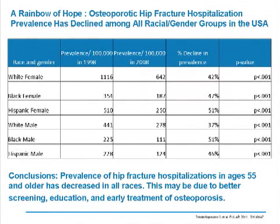Good news in the field of osteoporosis treatment comes from a US study looking at patients admitted for hip fracture. They showed a clear decline among all racial and gender groups. Fracture prevalence in 1998 was over 1,000 per 100,000. By 2008, there was a decrease of more than 40% in white, Black, and Hispanic females, and similar declines in males. It appears that all the attention for osteoporosis and preventive treatment has had a real effect — a significant decrease that people can be proud to have achieved.